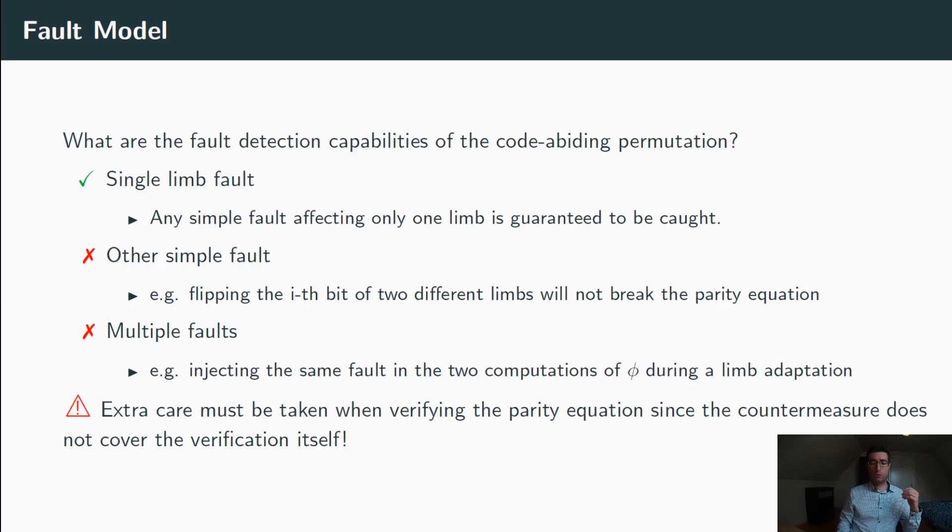What kind of faults can we hope to detect with the code-abiding permutation? Well, obviously we will detect any fault that breaks the parity equation. But more precisely, we are guaranteed to detect any single limb fault, which is the term that we use for a fault that affects only one limb. The code-abiding permutation, however, might not detect every possible simple fault. For example, it will not detect a fault that will flip two bits at the same position in two different limbs, since the parity equation will still be satisfied. Whether such a fault can indeed occur or not highly depends on the architecture and the implementation. In order to avoid such faults, one should try to separate the different limbs as much as possible in the implementation, for example, by storing them into different registers.